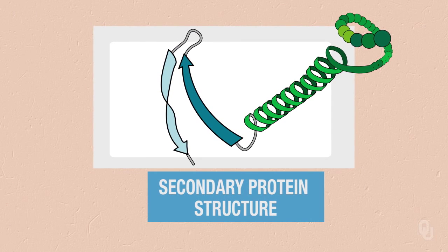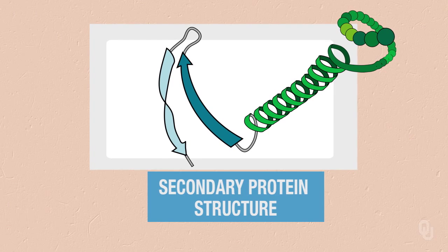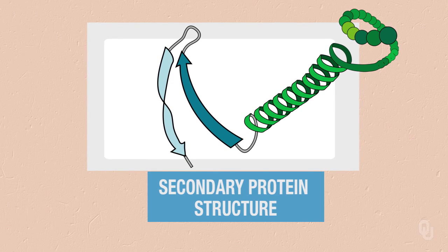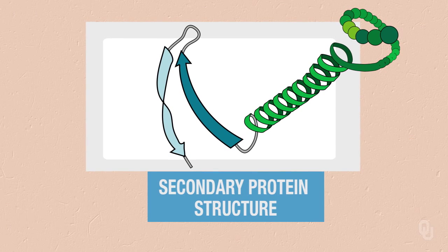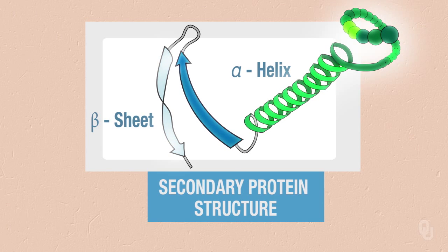If we think about our secondary structure, we start to bring in interactions between these amino acid groups. Two shapes start to form: alpha helix and beta sheets. We see these starting to form, and this gives us the interaction between the amino acid groups to give us this secondary structure.